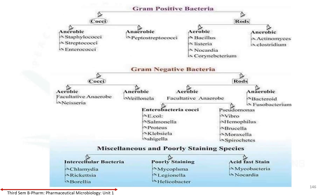In summary, the classification of bacteria includes: cocci, pleomorphic, and rod-shaped bacillus forms, which may be aerobic or anaerobic. Gram-positive and gram-negative classifications also apply. Gram-positive organisms include aerobic and anaerobic cocci. That covers the morphological classification of bacteria based on shape.